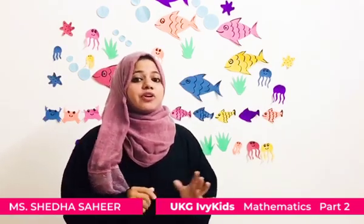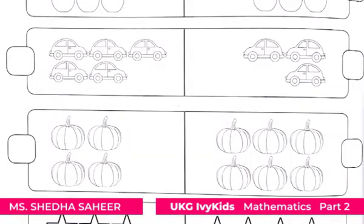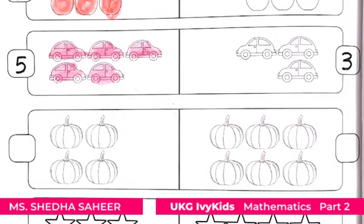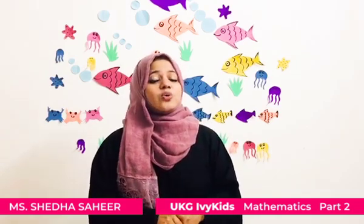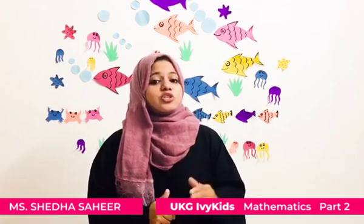Let's do some worksheets on count and compare. This is the worksheet on page number 98 of your course book. You have to count and write the correct number of objects in both boxes, and then find out the box with more objects and color that box. The first two are given as an example. Like this, you have to complete page number 99 in your course book. So, time is up.